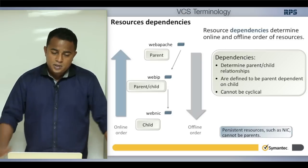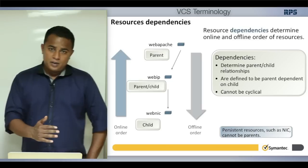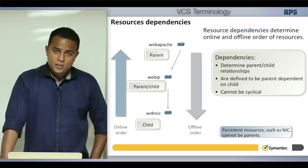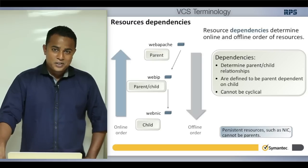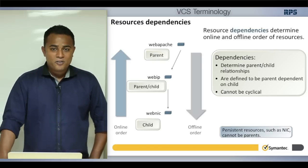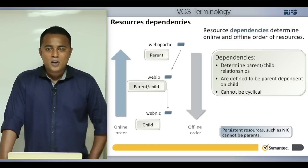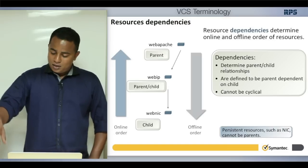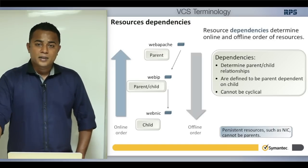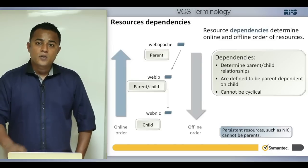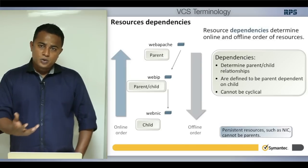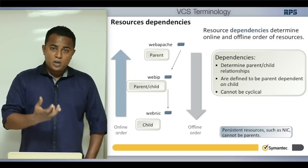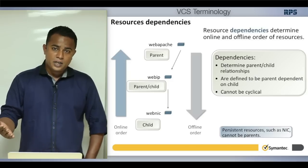Persistent resources cannot be a parent in a dependency. When bringing resources down, the parent is brought down first, then the child — but a persistent resource cannot be taken offline by VCS, so it cannot act as a parent. A persistent resource must always be a child resource; you cannot have a persistent resource depending on anything else.